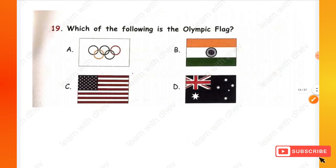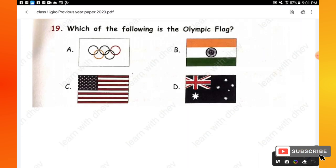Question 19: Which of the following is the Olympic flag? Option A is given — yes, option A is the Olympic flag.